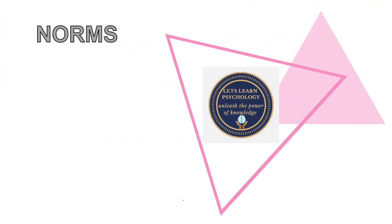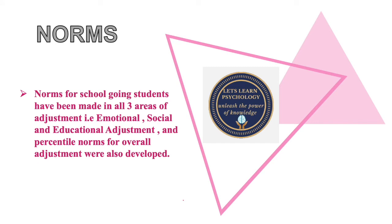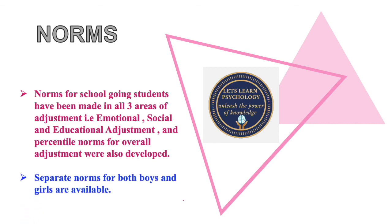Once scoring is done, compare the scores with the norms and convert the raw scores into percentile norms, which are available for individual domains — emotional, social, and educational adjustment — as well as overall adjustment. Separate norms are available for both boys and girls.